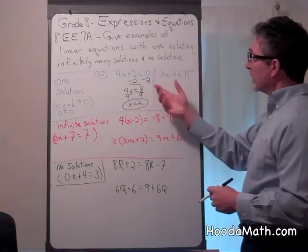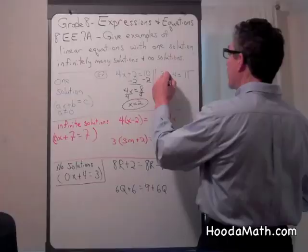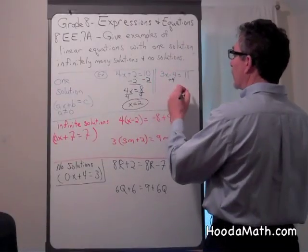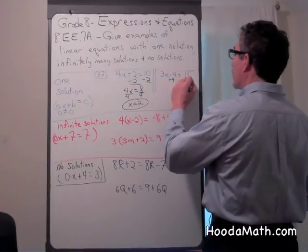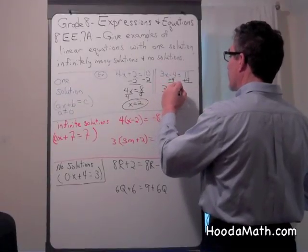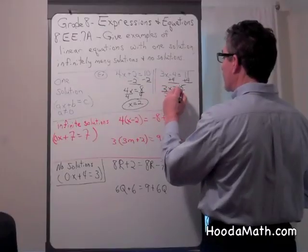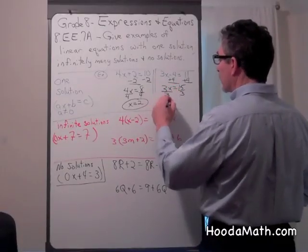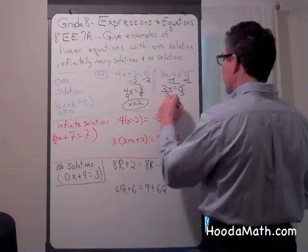Let's look at this one. We're going to add 4 to both sides. We're solving for the variable, and we get 3x equals 15. Divide both sides by 3, and the only solution is x equals 5.